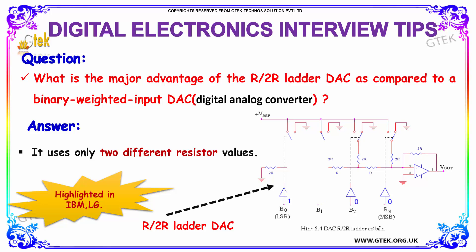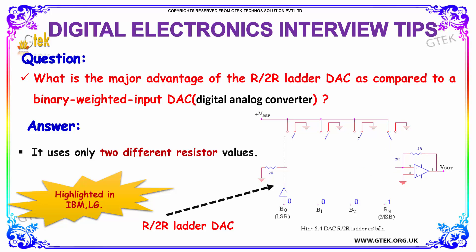The next question is: what is the major advantage of the R/2R ladder DAC as compared to a binary weighted input DAC? The answer is quite simple: the major advantage is that it uses only two different resistor values.